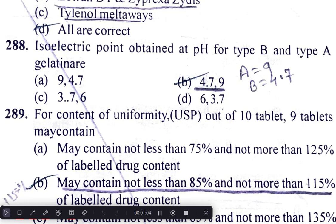The isoelectric points obtained at pH for type B and type A gelatins are 4.7 and 9, respectively.